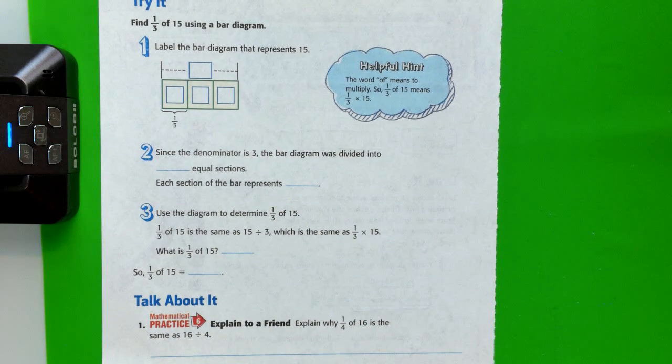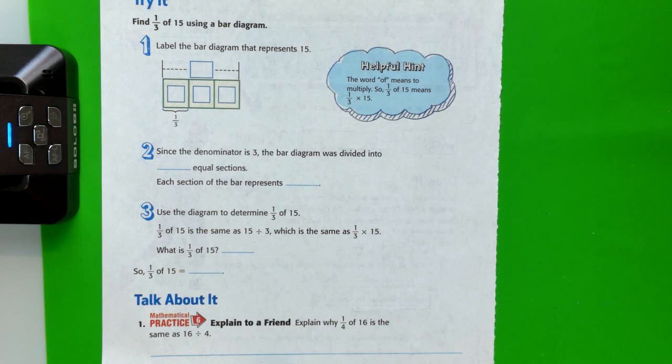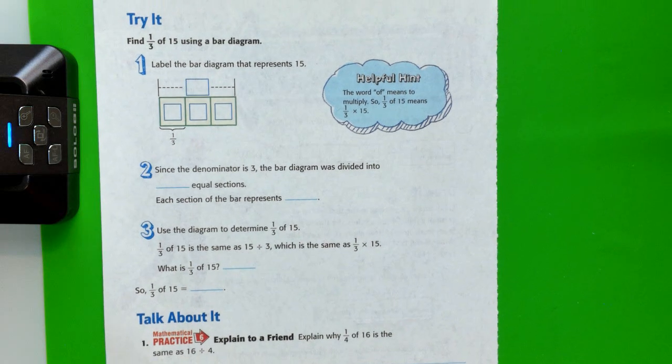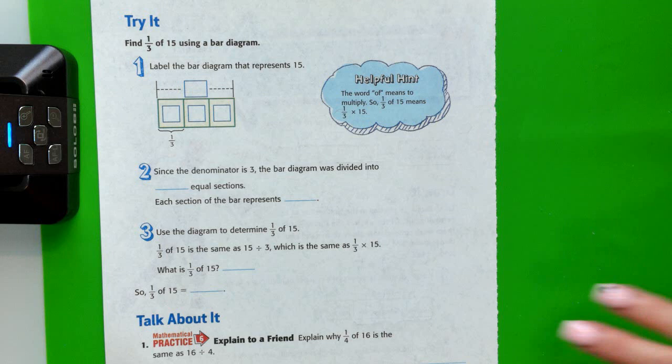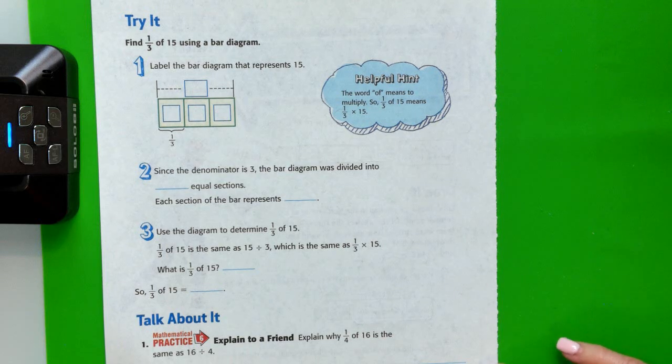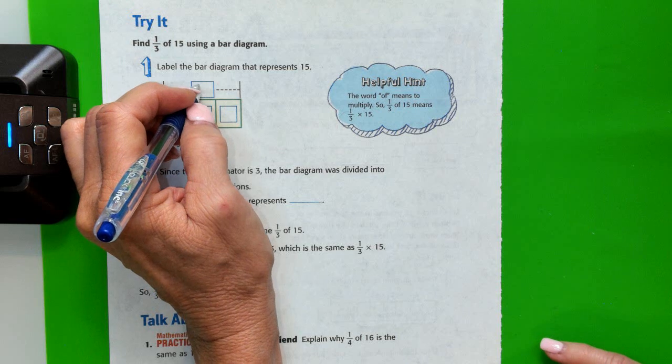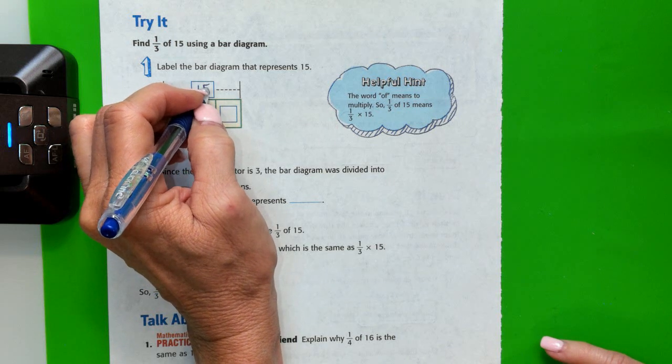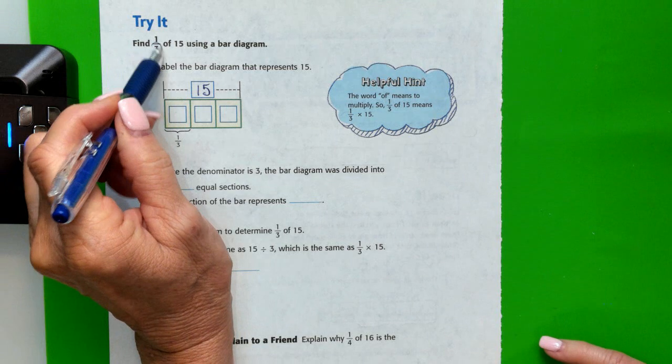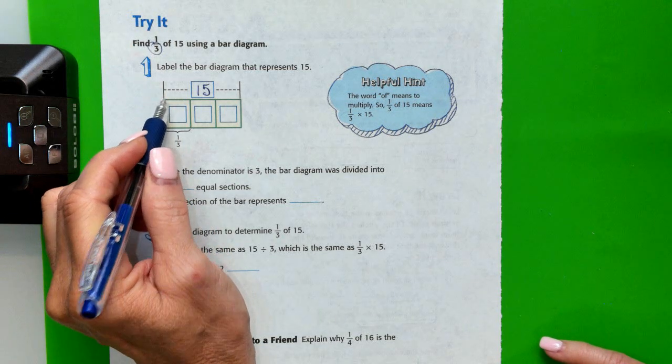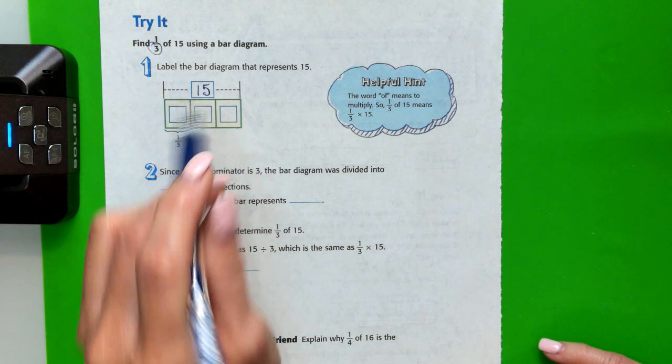So let's try it. We're going to find 1 third of 15 using the bar diagram. So we know that 15 goes here on our bar diagram. And we know that our denominator is 3. So it needs to be divided into 3 equal sections.